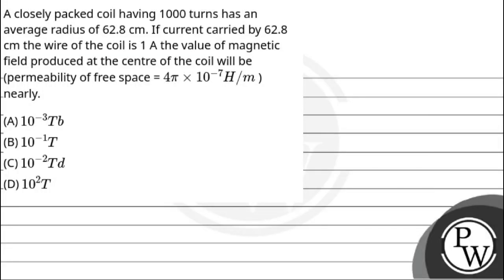Hello, let's see this question. The question says a closely packed coil having 1000 turns has an average radius of 62.8 centimeter. If the current carried by 62.8 centimeter wire of the coil is 1 ampere, the value of magnetic field produced at the center of the coil will be, and given that the permeability of free space equals 4π × 10^-7 H/m nearly.